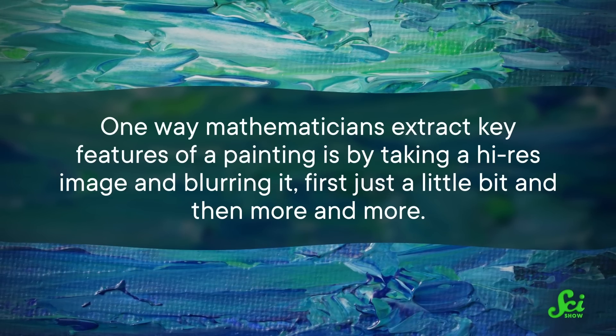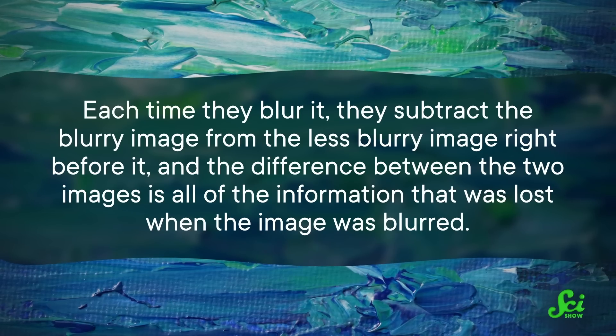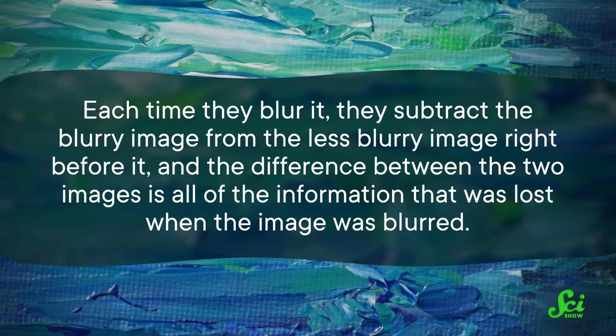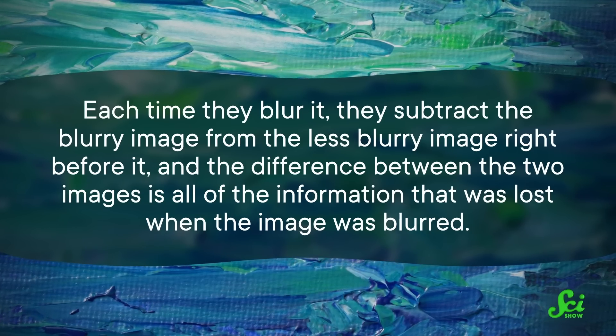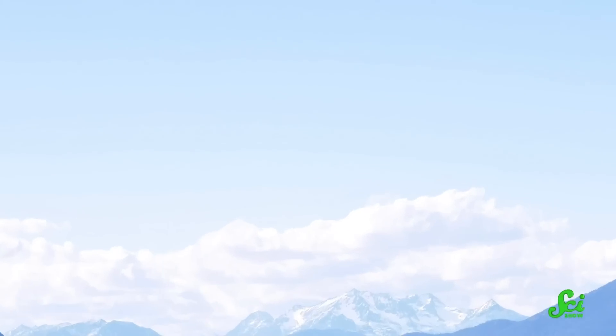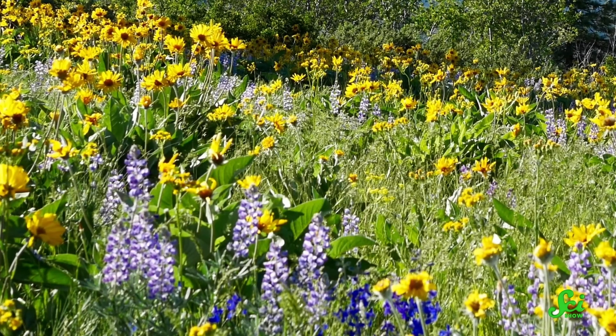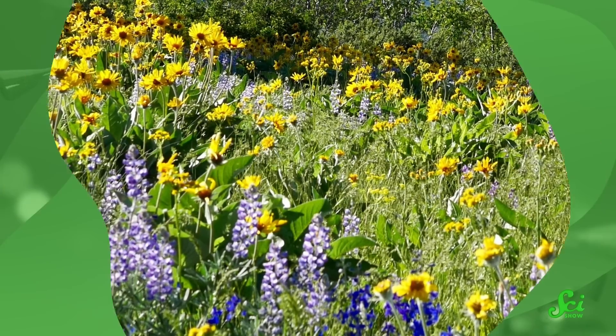One way mathematicians extract key features of a painting is by taking a high-res image and blurring it, first just a little bit, and then more and more. Each time they blur it, they subtract the blurry image from the less blurry image right before it. And the difference between the two images is all of the information that was lost when the image was blurred. You can imagine that in some spots, like the sky, there won't be a big difference between the blurred version and the original, because there's just not much detail there. But in other spots, say a garden full of flowers, there will be a bigger difference, because in the blurred version, you lose a lot of information about the details of the flowers, and the fruits, and the leaves. So each time you blur and subtract, you capture some key features of the original image. As you do this with blurrier and blurrier images, you extract more and more levels of detail.